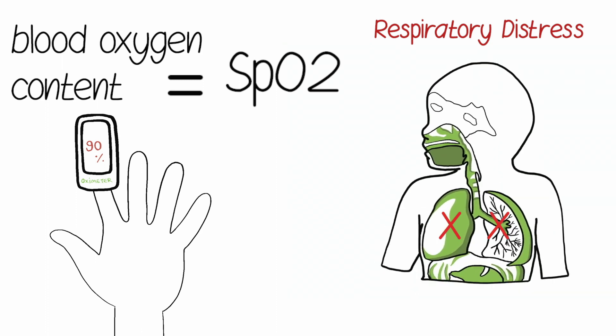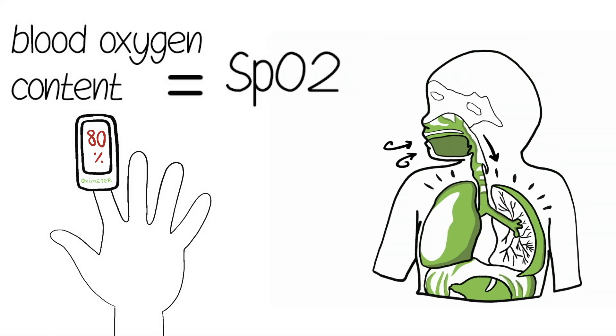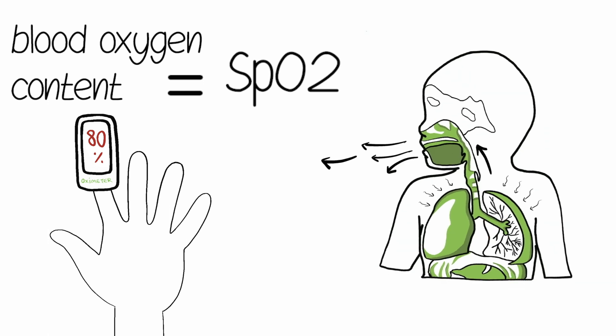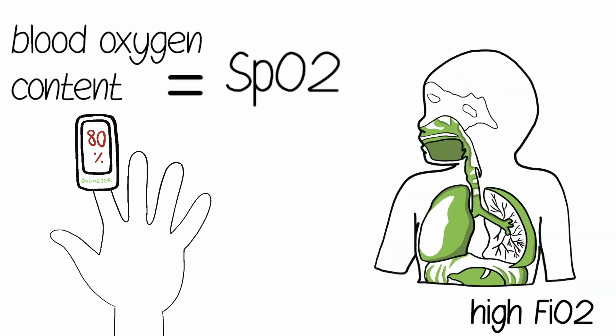When this happens we see lower SpO2. One way to treat the low SpO2 is to increase the amount of oxygen coming into the lungs by providing higher FiO2 levels.